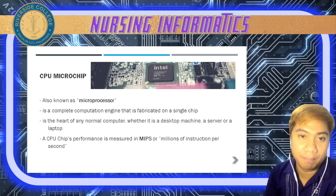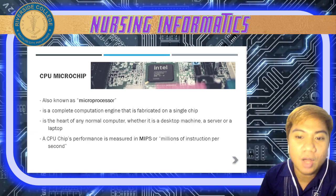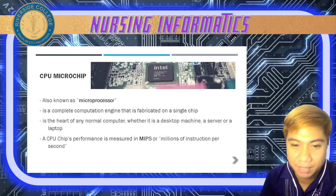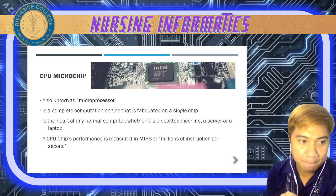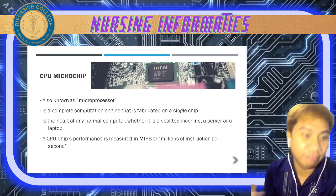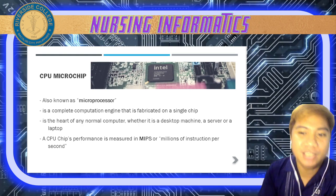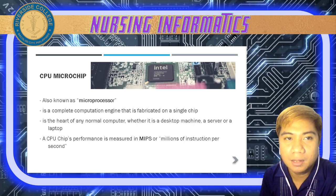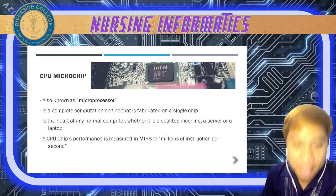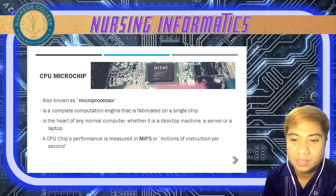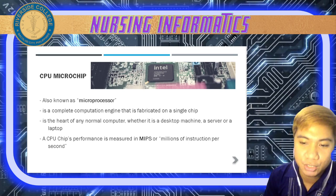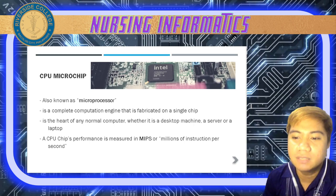Next, we have the microchip, also known as the microprocessor. It is a complete computation engine fabricated on a single chip — as you can see in the picture, that is our microchip. If you check your laptops, you may see Intel i3 or Intel Core i5 10th Gen, which shows the kind of microprocessor you have. It is the heart of any normal computer whether it is a desktop, server, or laptop, and a CPU chip's performance is measured in MIPS — millions of instructions per second.